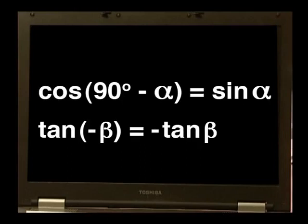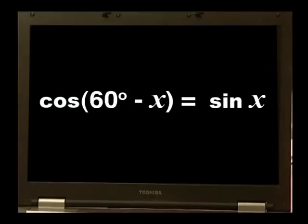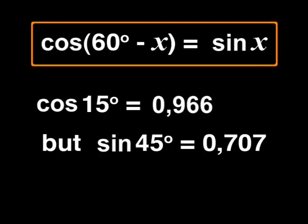Here are some more reduction formulas: cos of 90 minus alpha equals sine of alpha, tan of minus beta equals negative tan of beta, and there are several more like them. Let's look at the next one on the list. Is cos of 60 degrees minus x always equal to sine x? No, it's not. I used 45 degrees for x, and because cos of 15 degrees is certainly not equal to sin 45 degrees, it is not an identity.